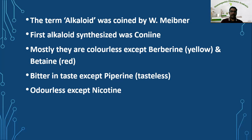Most alkaloids are bitter in taste, except piperine — piperine is an alkaloid which is tasteless. Most alkaloids are odorless, except nicotine. Nicotine is an alkaloid of the tobacco plant which has a characteristic and pungent odor. These are the common properties of alkaloids: colorless, bitter in taste, and mostly odorless.